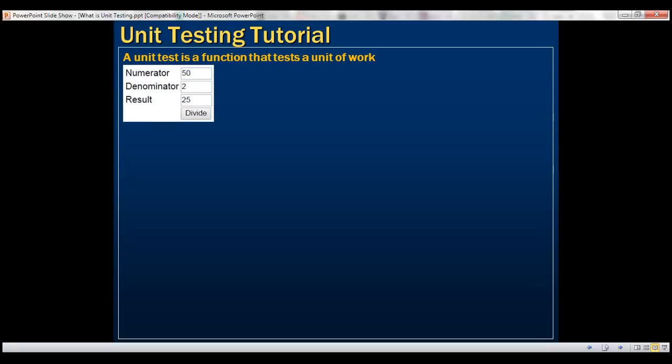Right here we have a very simple web page that accepts two numbers: numerator and denominator. For numerator we have a value of 50 and for denominator we have a value of 2. When we click the divide button, the page divides the numerator by denominator. So 50 divided by 2, the result—the quotient value—is 25, which is displayed in the result text box.